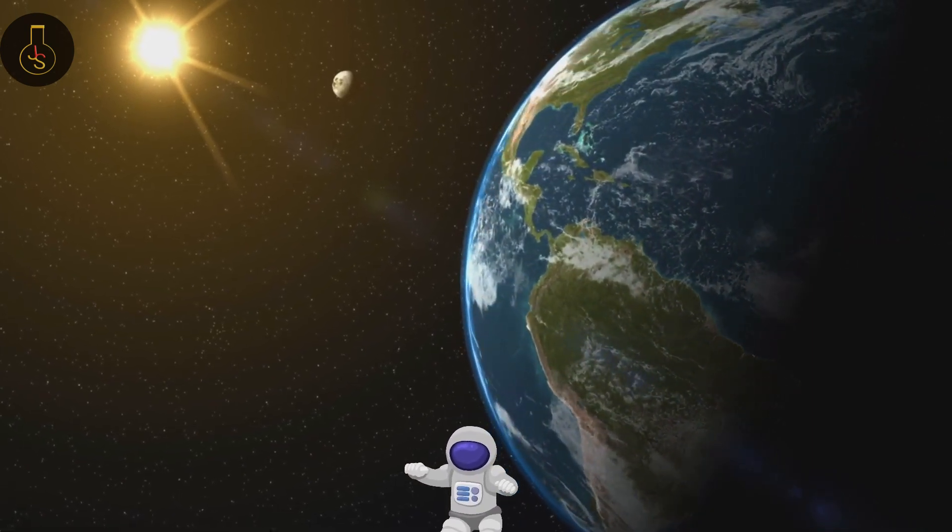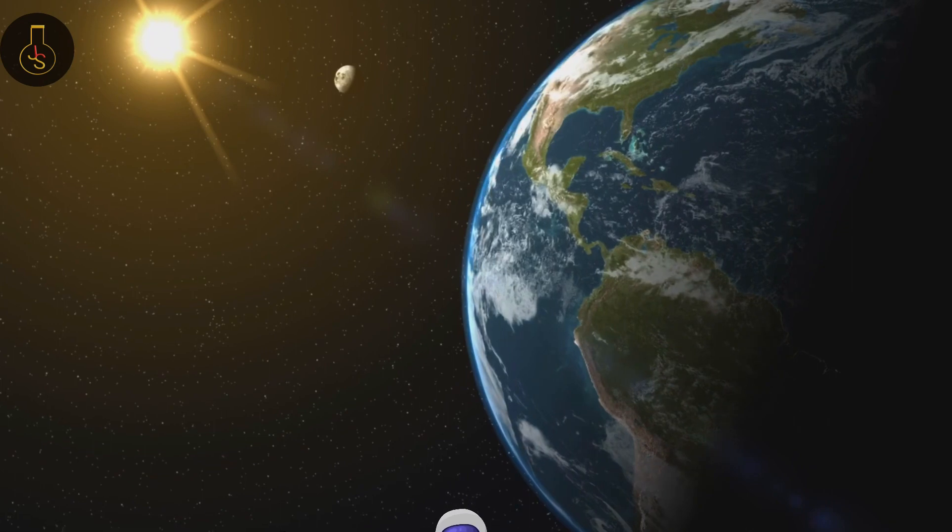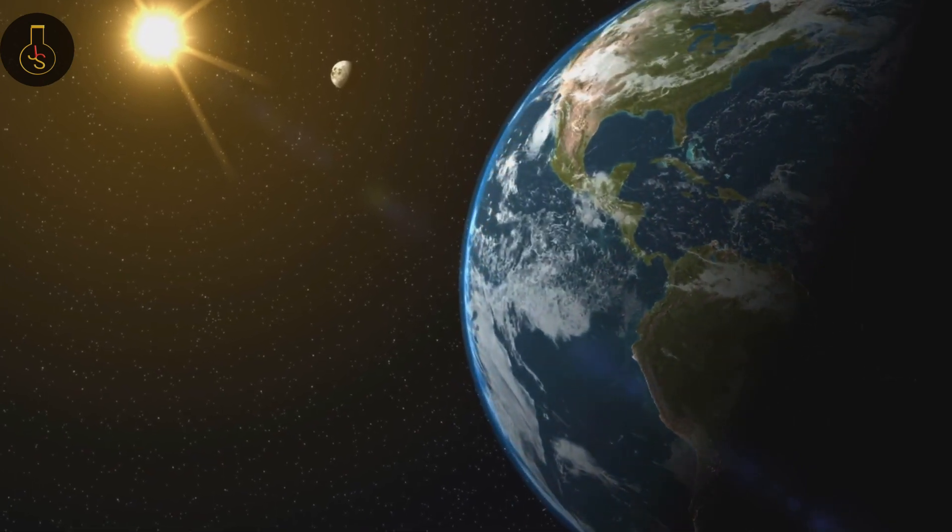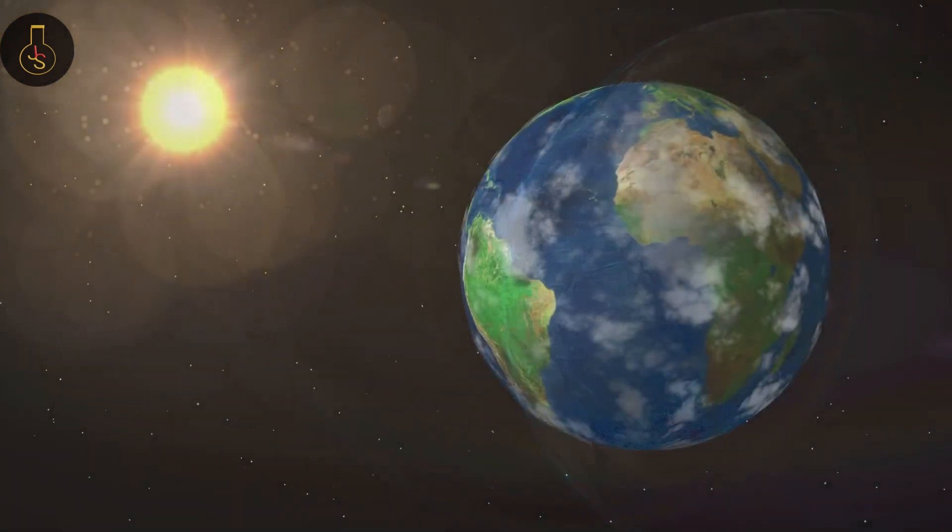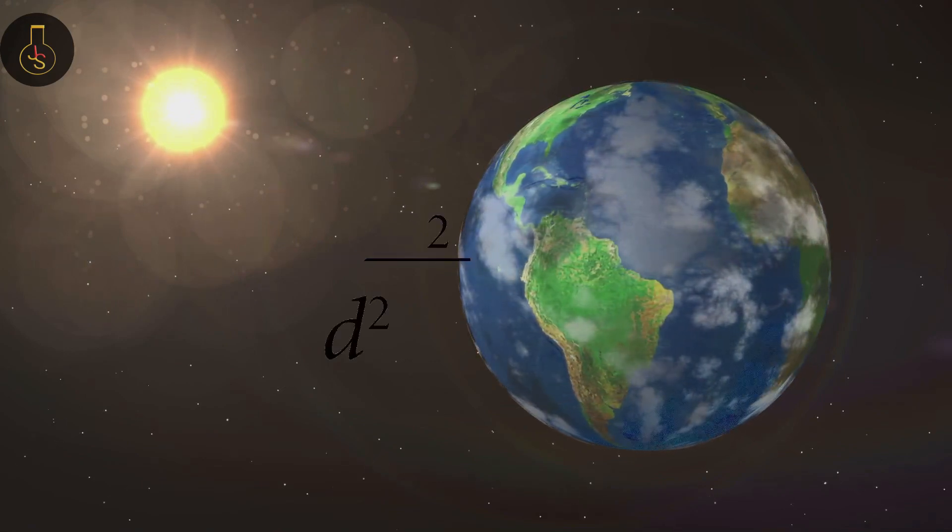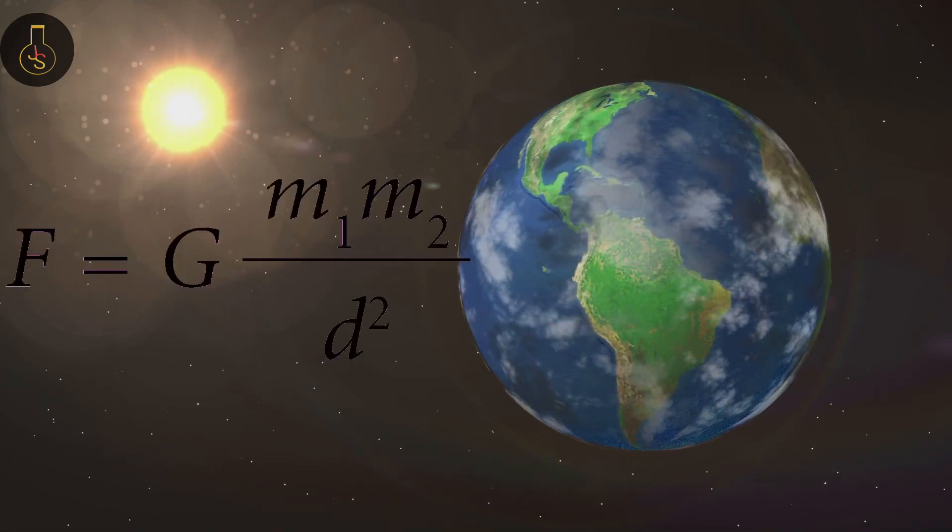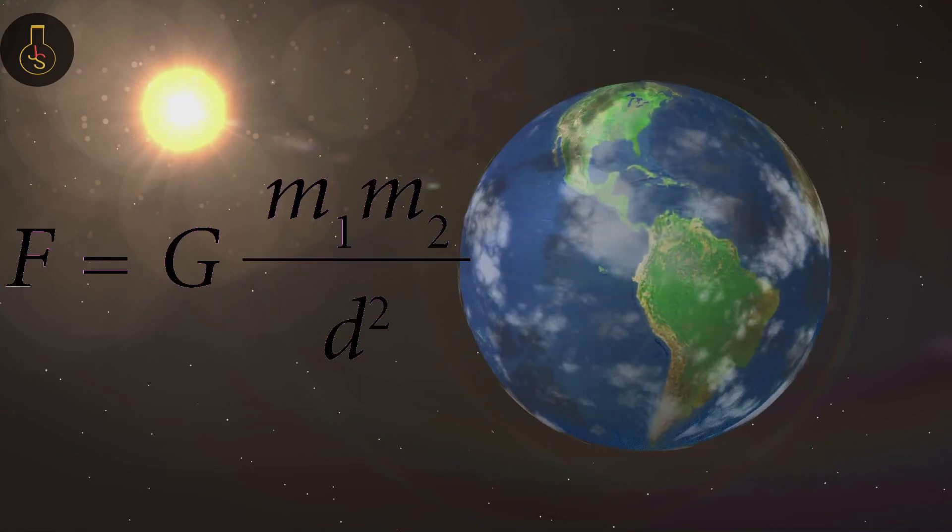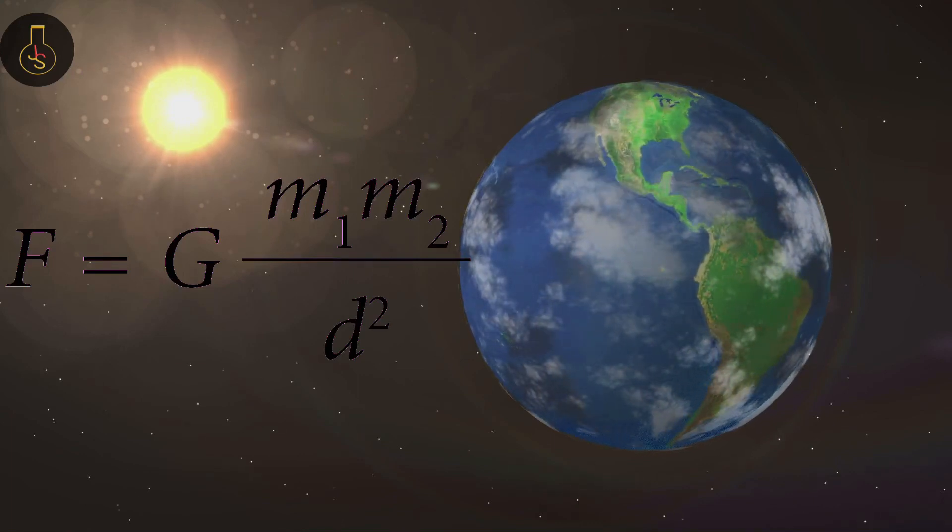Gravity, simply put, is a force that causes any two bodies to be attracted to each other. The magnitude of this force is proportional to the product of their masses and inversely proportional to the square of the distance between them.